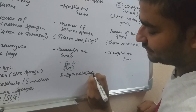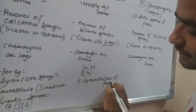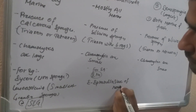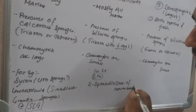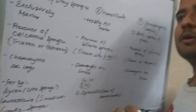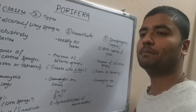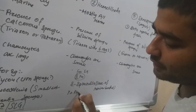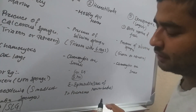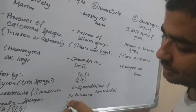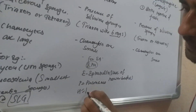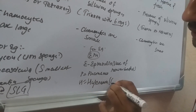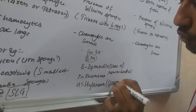An example of Hexactinellida is the Venus flower basket (Euplectella). Another example is Hyalonema — the glass rope sponge.